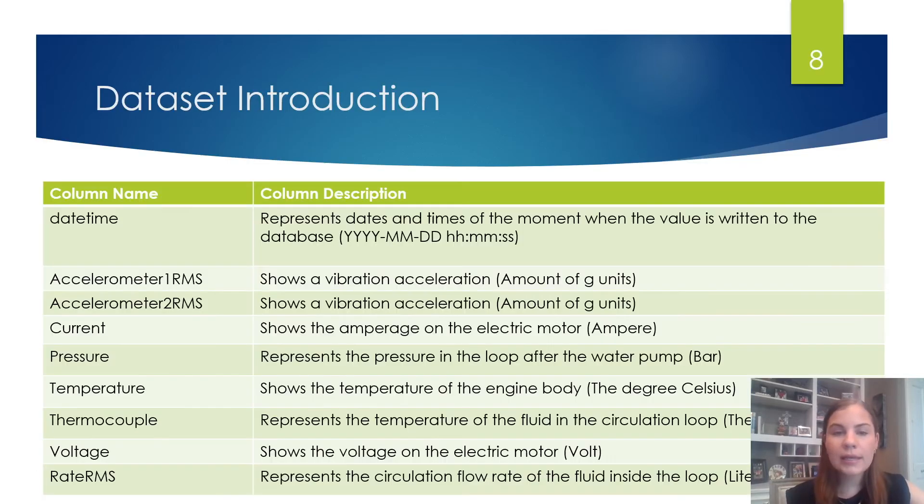I have a dataset that has time series data on various tags that are attached to these machines. So the dataset that we'll be using, we have the information that's pictured on the screen. We have the datetime, and then other various values that we'll use to train our anomaly detector. So for example, we have the current, the pressure, and the temperature that are associated with this machine.